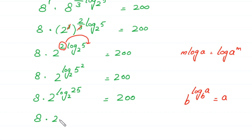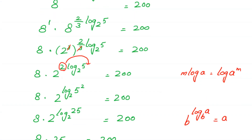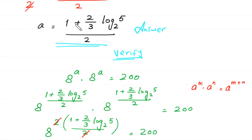Using the log property b to the power log base b of a equals a, we get 2 to the power log base 2 of 25 equals 25. So we have 8 times 25 equals 200, and 200 is equal to 200. You can see that the left hand side equals the right hand side, so the value of a equals (1 plus 2 over 3 times log base 2 of 5) over 2 is a valid solution.